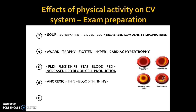Number 6 also links to 'flicks' — imagine a flick knife. A flick knife stabs someone and causes blood. Blood is red, and red blood cells increase as a result of exercise. This is mainly a performance benefit, however you can loosely link it. There's an increase in red blood cell production as a result of long-term physical activity. This allows more oxygenated blood, and if you say there's an increased amount of oxygenated blood reaching the heart muscle or myocardium, you may gain a mark.